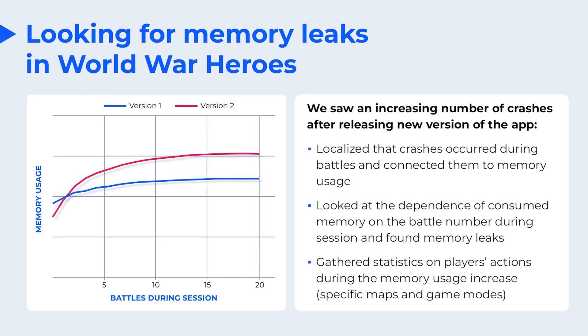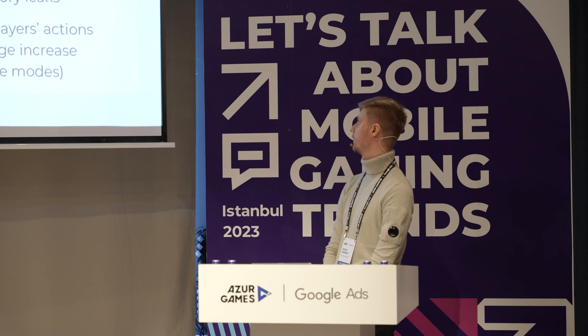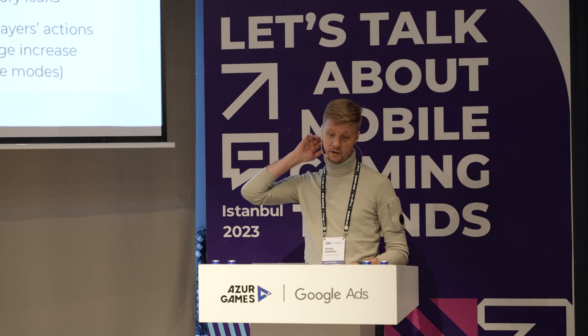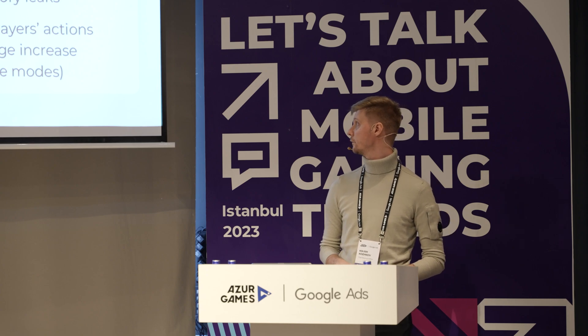Here's an example of how we used technical metrics in a real-life scenario in World War Heroes, a multiplayer shooter game. After releasing a new version of the game, we saw an increasing number of crashes. Developers first localized that most crashes were connected to memory usage. Analysts then localized that crashes occurred mostly during battles. We looked at the dependence of consumed memory on battle number and found memory leaks. We then gathered additional analytics, specifying maps and game modes where it happened, which helped us find the problem, fix it, and release a hotfix.